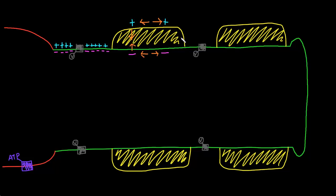So in a myelinated axon like this, there'll be this alternation: at the nodes of Ranvier, which is high capacitance, there'll be lots of charges; and in the myelinated segments, which is low capacitance, there'll be fewer charges. For unmyelinated axons, they're basically all just like the nodes of Ranvier — high capacitance, so they store lots of charges on both sides of the membrane.